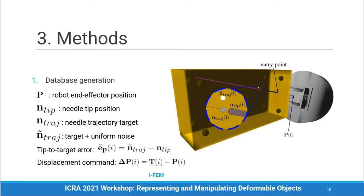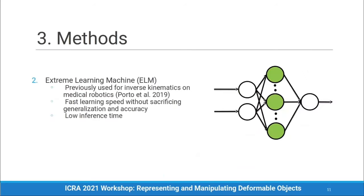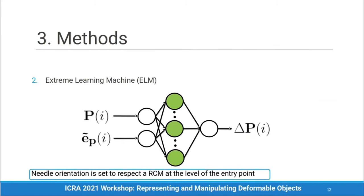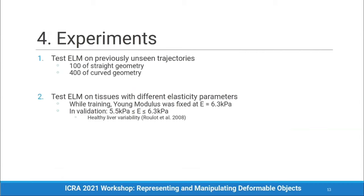We also add uniform noise to the needle target position so it can better generalize to non-straight trajectories. The chosen neural network is an Extreme Learning Machine, or ELM, with a single hidden layer, which presents fast learning speed and low inference time. As inputs it takes the robotic position and the tip-to-target error, and outputs a displacement for the robot to steer the needle along the trajectory. The needle orientation is set to respect the remote center of motion at the entry point.